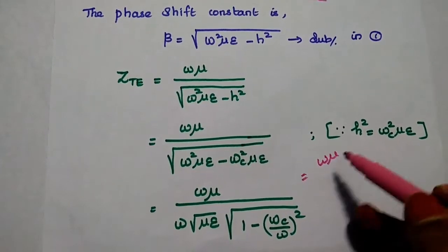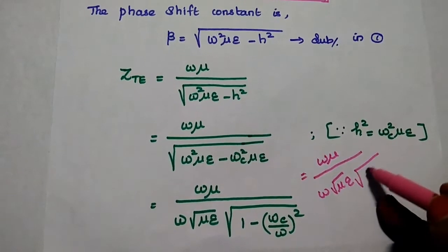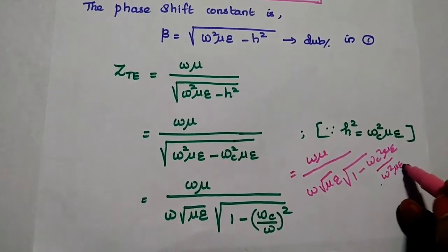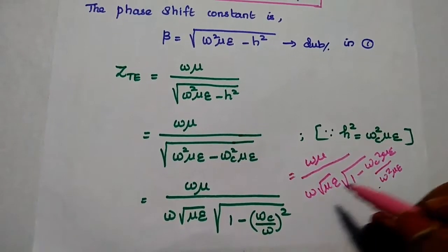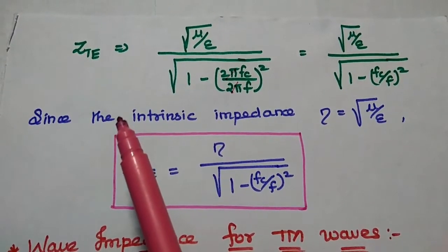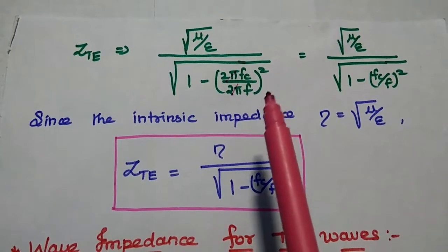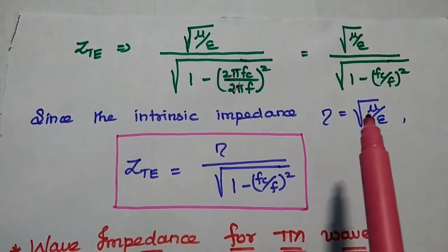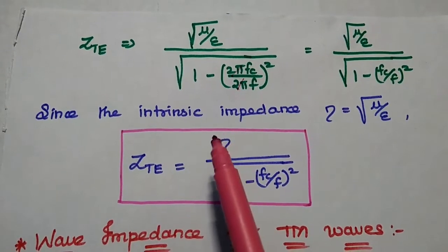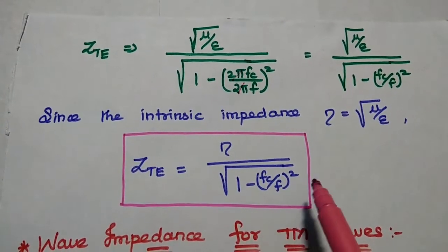Taking omega squared mu epsilon as a common factor from the square root, the numerator becomes omega mu and the denominator becomes omega times the square root of mu epsilon, multiplied by the square root of 1 minus omega_c squared mu epsilon divided by omega squared mu epsilon. Since mu epsilon cancels, we get the wave impedance Z_TE equal to the square root of mu by epsilon, divided by the square root of 1 minus (f_c by f) squared.